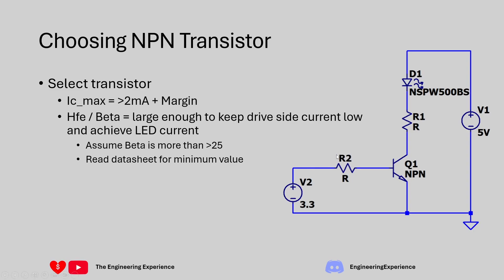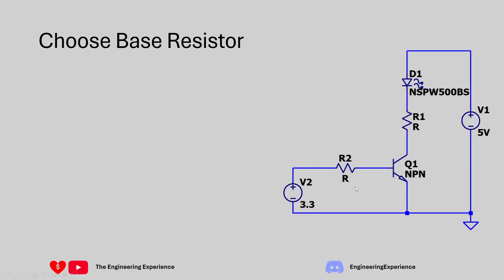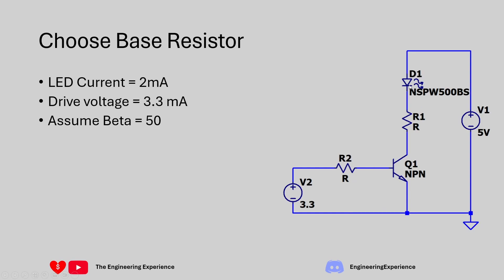We'll find a transistor with a beta of more than 25. Minimum values are given in the datasheet - look for the minimum rather than the typical. I'll choose a jellybean transistor, for example the 2N3904, which is also referenced in the Art of Electronics. For a collector current around 0.1 milliamps the beta is roughly 40, so I've gone with a minimum beta of 50 for this design.